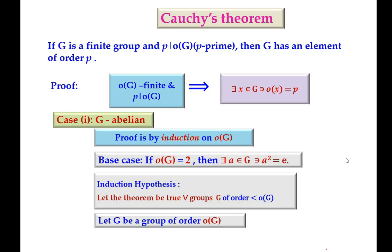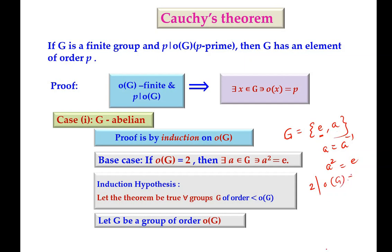When the order of G is 2, we can find an element A in G such that A² = E. If G has only two elements, namely the identity element and another element A, then A must have a self-inverse, meaning A = A⁻¹, or in other words A² = E. This means element A has order 2. So when order of G is 2, which means 2 divides the order of G, G has an element of order 2.